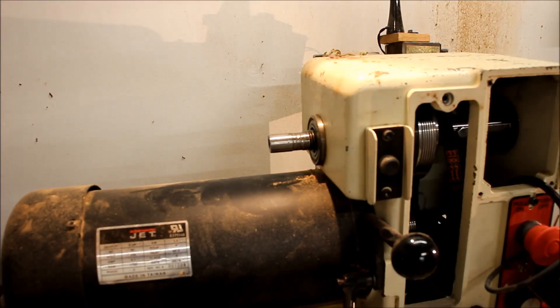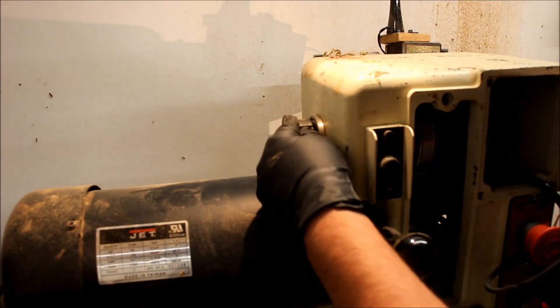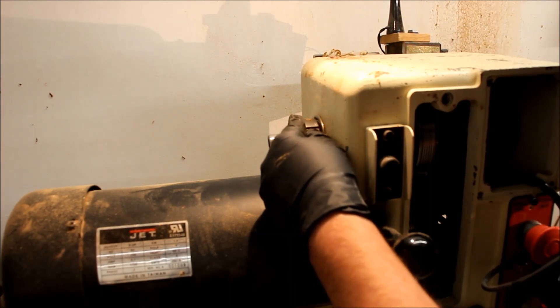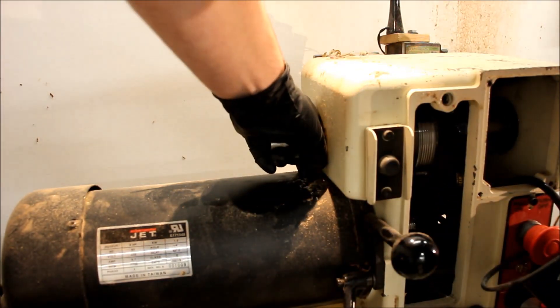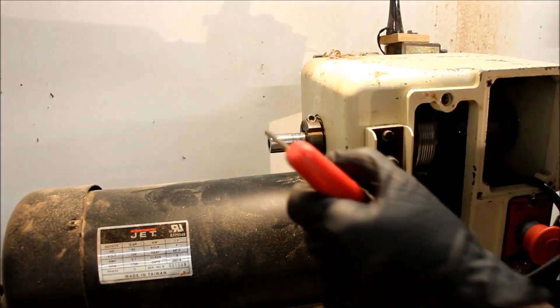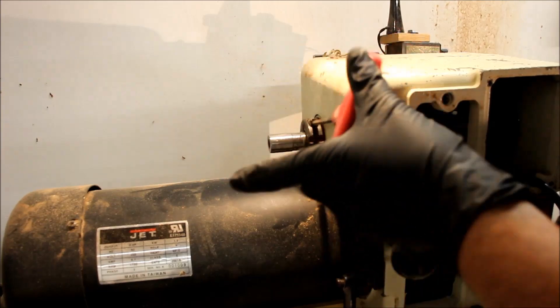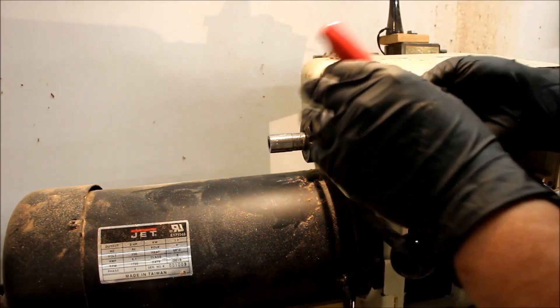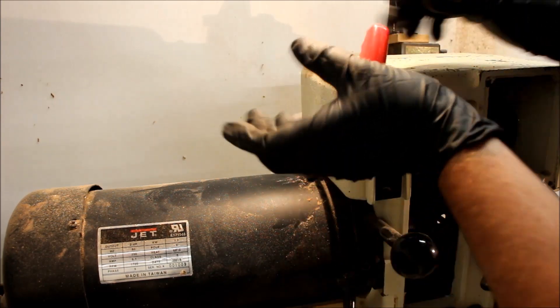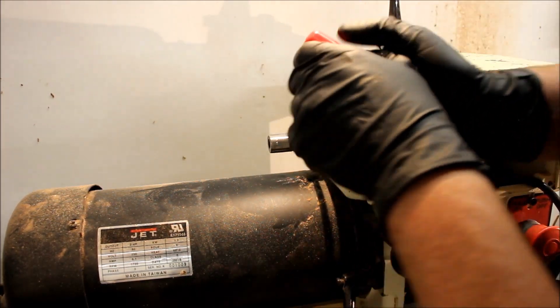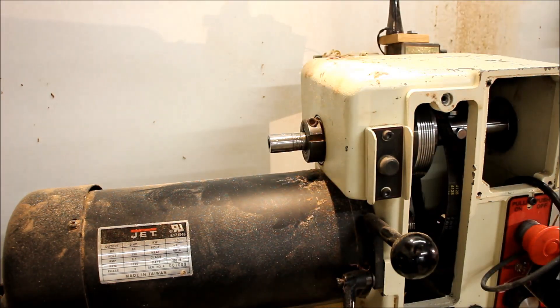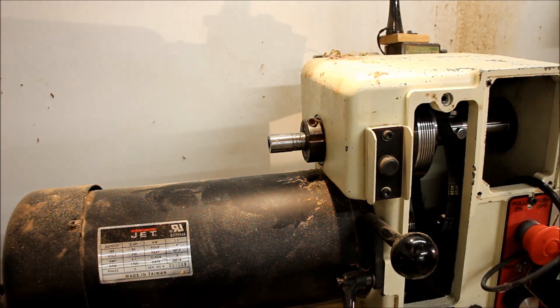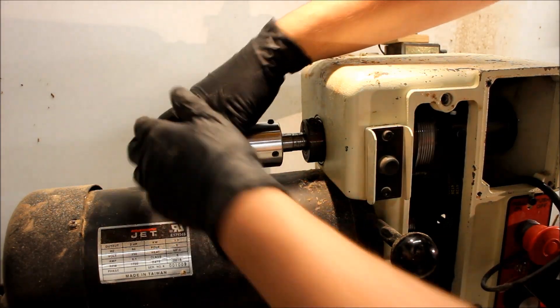And now working from the other end we'll go ahead and reinstall this locking device which basically holds the spindle tight against the two bearings. That's got an Allen on it that gets tightened down. We can reinstall our handle now.